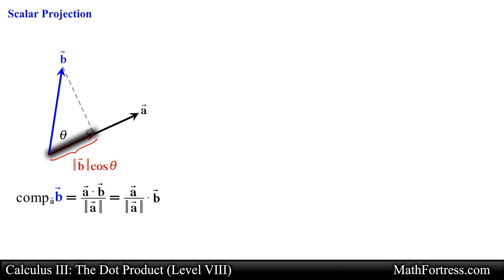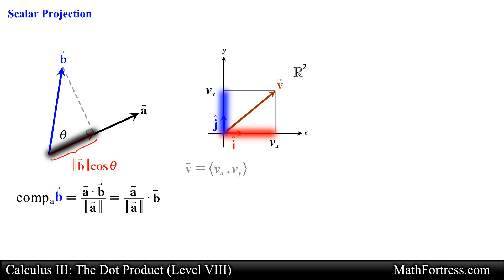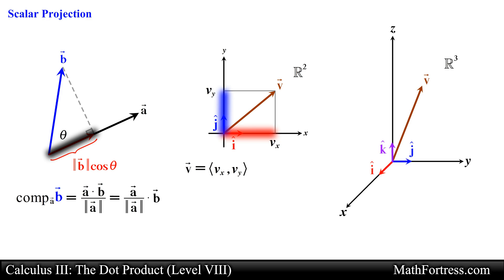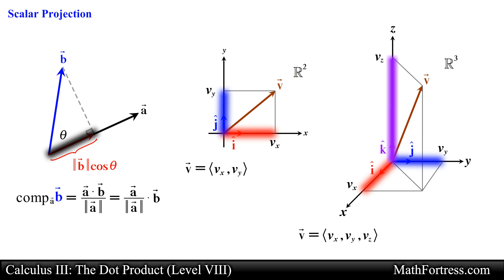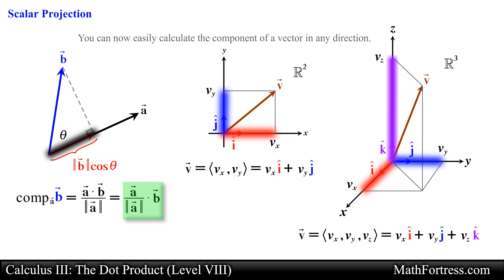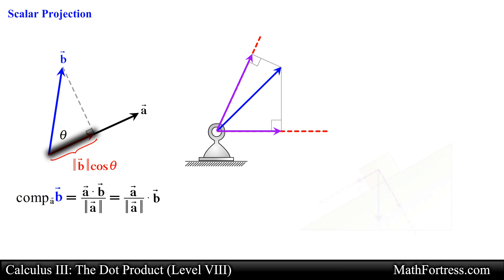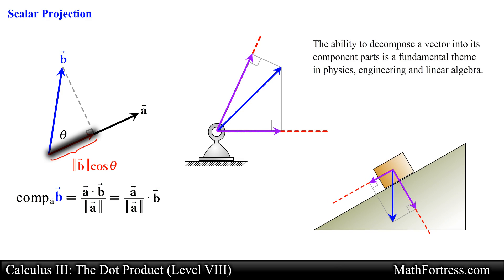The scalar projection is nothing new — we have already computed this quantity when we broke apart a vector in R² into its x and y components, and a vector in R³ into its x, y, and z components. In those cases we found the scalar projection in the direction of the standard unit vectors i-hat and j-hat for R², and i-hat, j-hat, and k-hat for R³. What makes the dot product so useful is that you can now easily calculate the component of a vector in any direction, not just the standard unit vectors i, j, and k. The ability to decompose a vector into its component parts is a fundamental theme in physics, engineering, and linear algebra. We will see this in action in a later video.